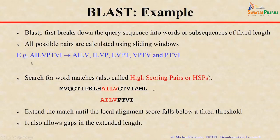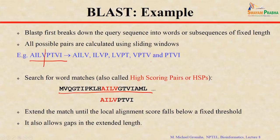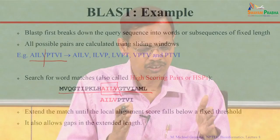BLAST uses PAM or BLOSUM matrices to give scores for ungapped alignments. For example, if you have a sequence A, I, L, B, P, T, V, I — BLAST splits this into smaller overlapping pieces, such as four-residue segments: ALIB, ILVP, LVPT, VPTI, and so on. These are the overlapping segments. BLAST then checks whether there is a match of this query sequence with any of these tetrapeptides in the database — called high-scoring pairs, where all residues match in a sub-sequence.